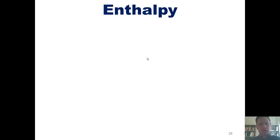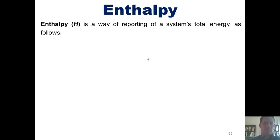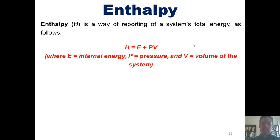Let's now turn to a different subject, enthalpy. Enthalpy, abbreviated as H, is a way of reporting a system's total energy according to the following equation. Enthalpy equals E plus P times V, where E equals internal energy, P equals pressure, and V equals the volume of a system.